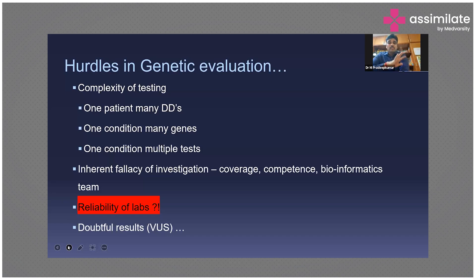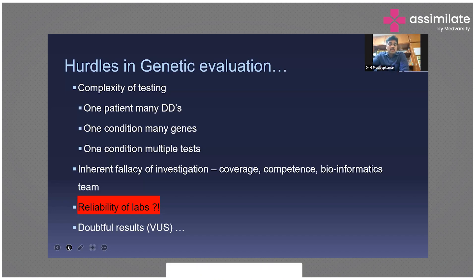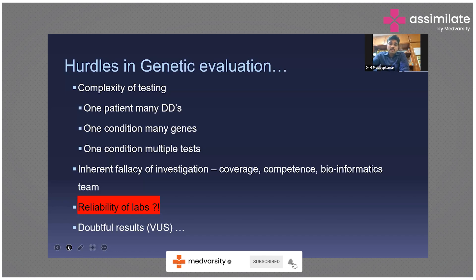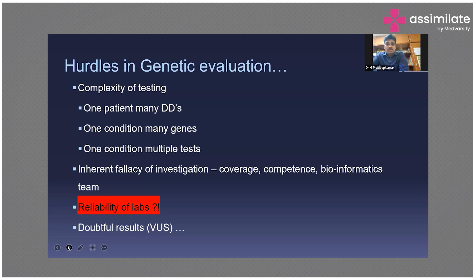One condition can have many genes — for example, inborn errors of metabolism involve so many genes, and osteogenesis imperfecta has so many types and genes. One condition may require multiple tests: for Russell-Silver syndrome you may need methylation studies, look for micro-deletions, or even do sequencing. The coverage of each test will vary, and the competence of the bioinformatics team plays a major role in filtering variants and giving you results.